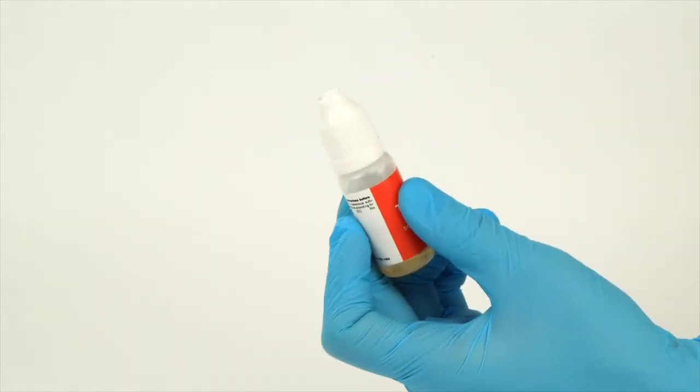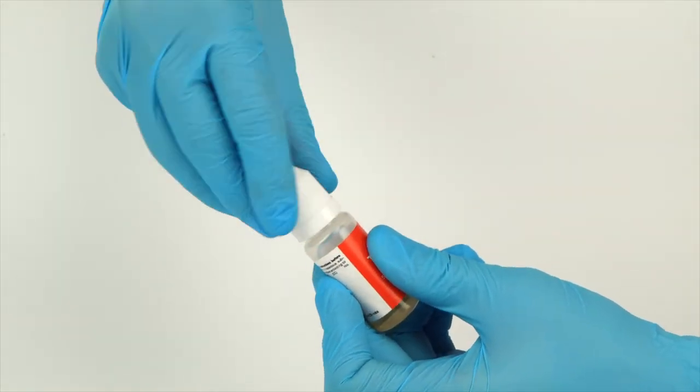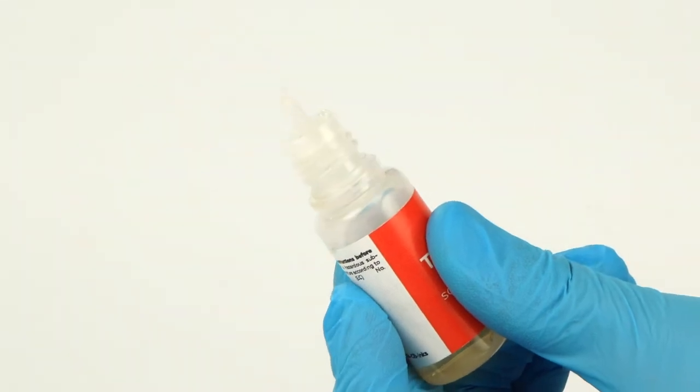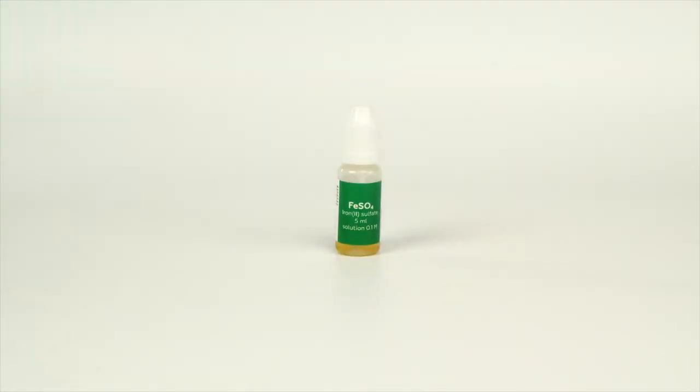To open a bottle containing a reagent, push the cap down and turn it. Carefully pierce the bottle nozzle using an unbent paper clip.